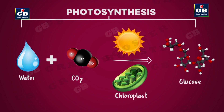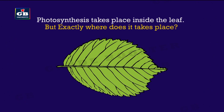In photosynthesis, water, carbon dioxide, and sunlight are the raw materials, while glucose and oxygen are the products. We know that photosynthesis takes place inside the green leaves.